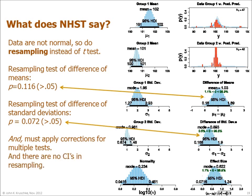Moreover, in NHST we must apply corrections for conducting multiple tests, which would increase the p-values even more. With resampling, there are no confidence intervals on parameter values, because there are no parameters. Thus, Bayesian estimation not only provides rich information about the entire distribution of credible parameter values given the data, it is also more sensitive than resampling in this situation.